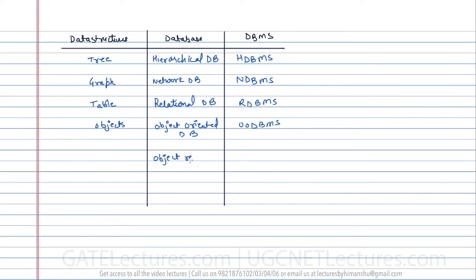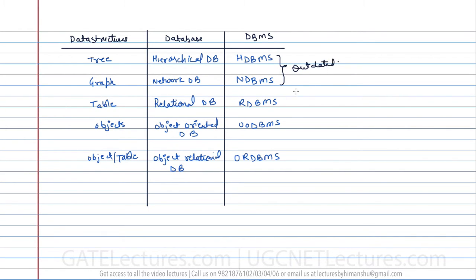Among all these different types of databases, the hierarchical database management system and NDBMS — the network database management system — are now outdated, meaning we don't use them anymore. In this subject we are going to study relational database management system and object-relational database management system. These are relatively new, but the relational DBMS is most widely used because it is very easy to understand, easy to grasp, and easy to implement.